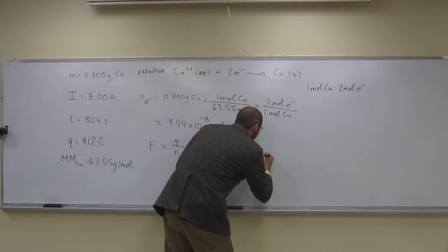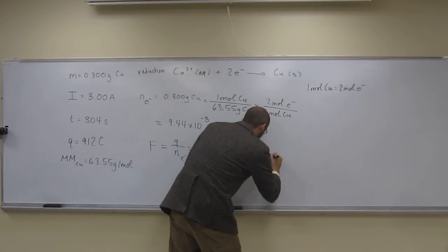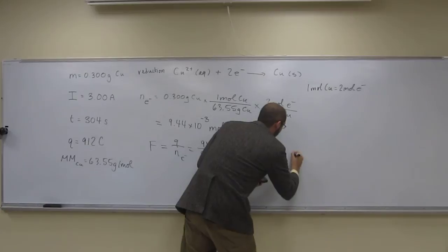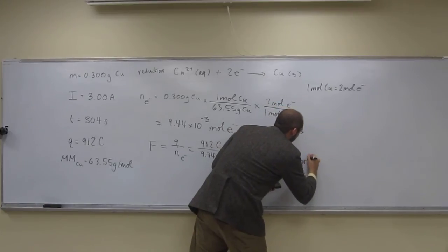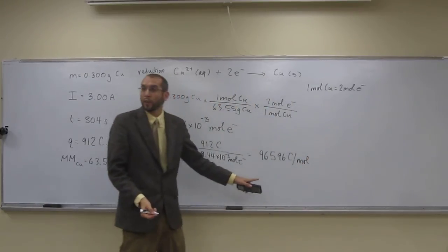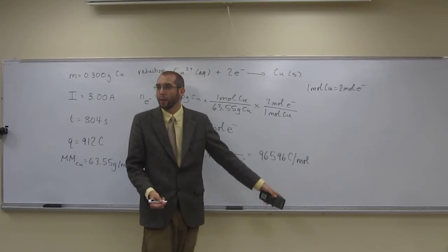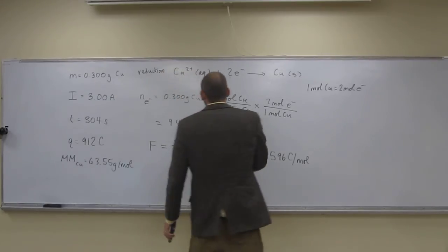Well, I'll write out what it says on my calculator. So 96,596 Coulombs per mole. Right? That's pretty close. But we want to put this to the right number of sig figs, right? So we've got 3, 3.